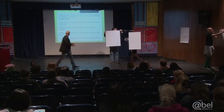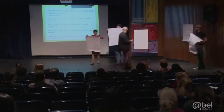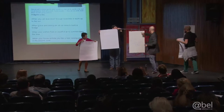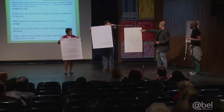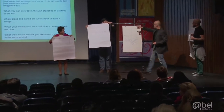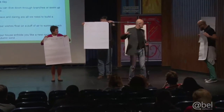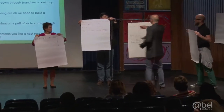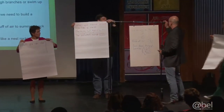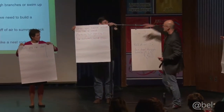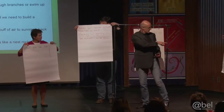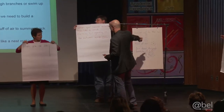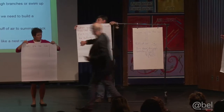'When you can dive down through the branches' is here. 'Swim up to the sun' is here. We don't have 'build a bridge.' We have 'when your wishes float on a puff of air' over there. There's another puff of air and then the dive.